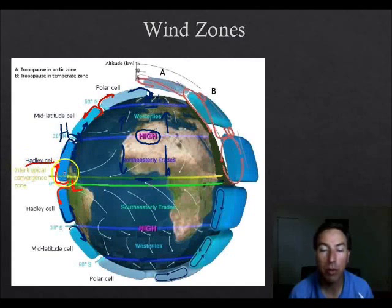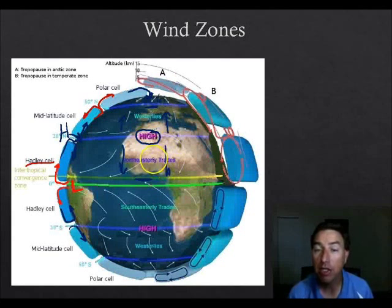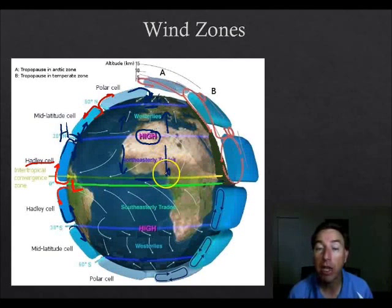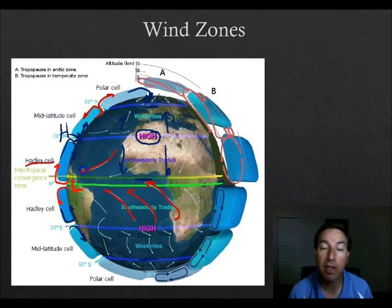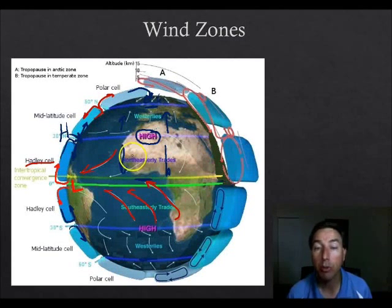Hadley cells, named after the person who discovered them, set up wind patterns across the globe. If the globe were not spinning, these winds would travel in straight paths. However, because the globe is spinning, we get curved wind paths instead. This is because of the Coriolis effect — the effect of Earth's spinning motion on moving particles. Both air and water have moving particles affected by this.